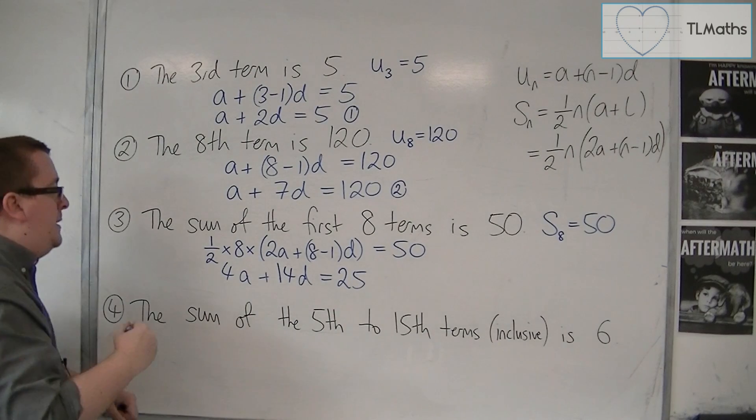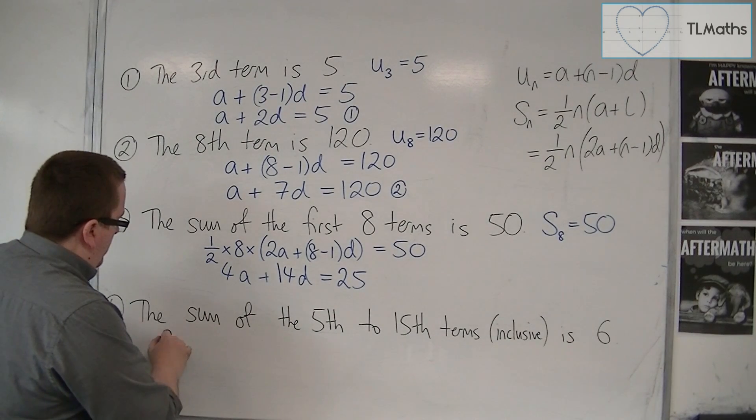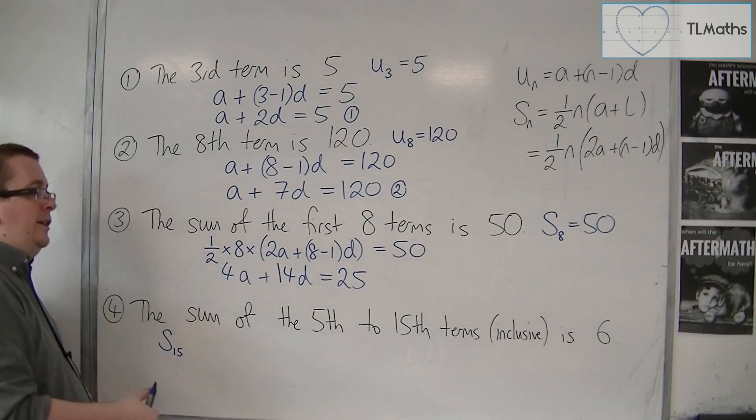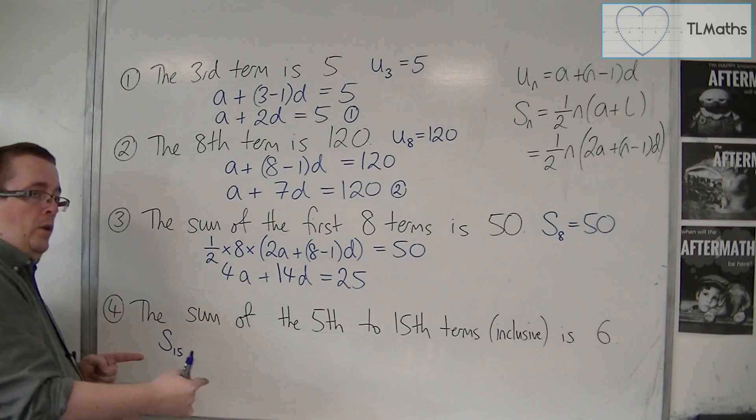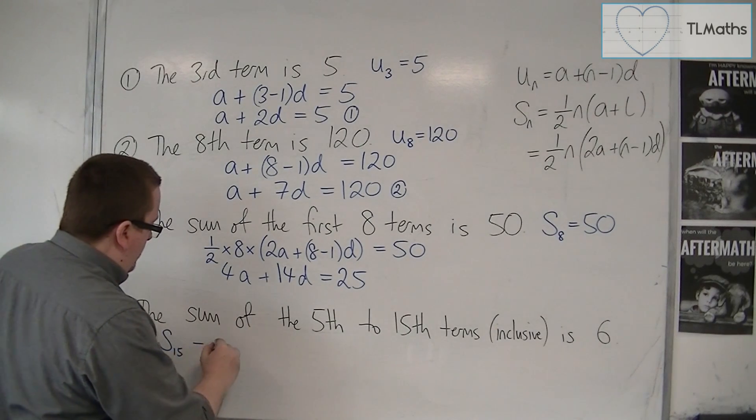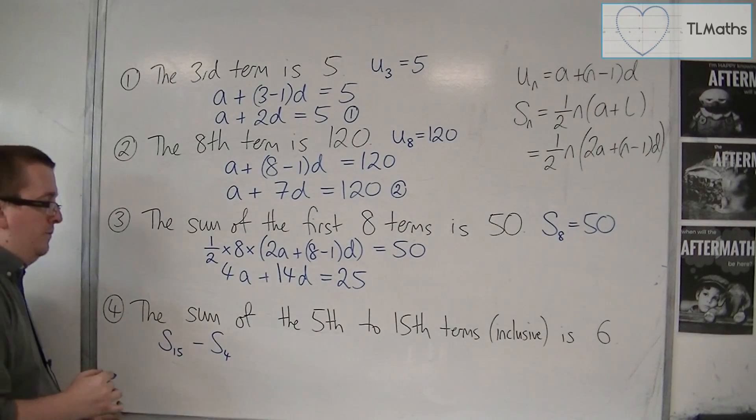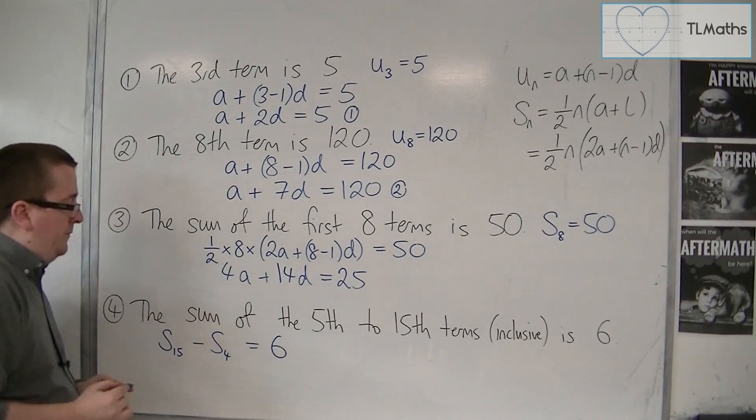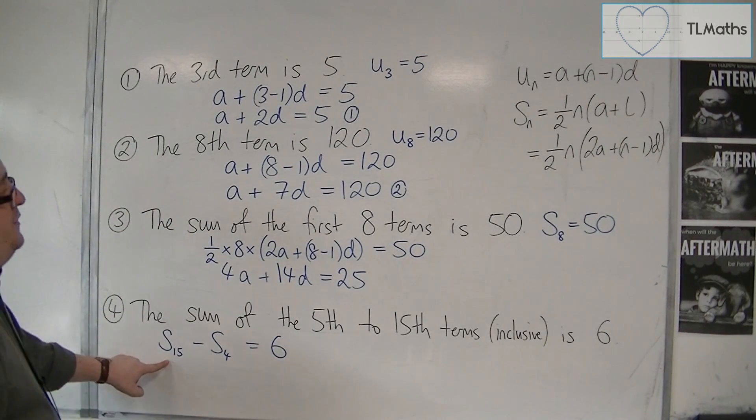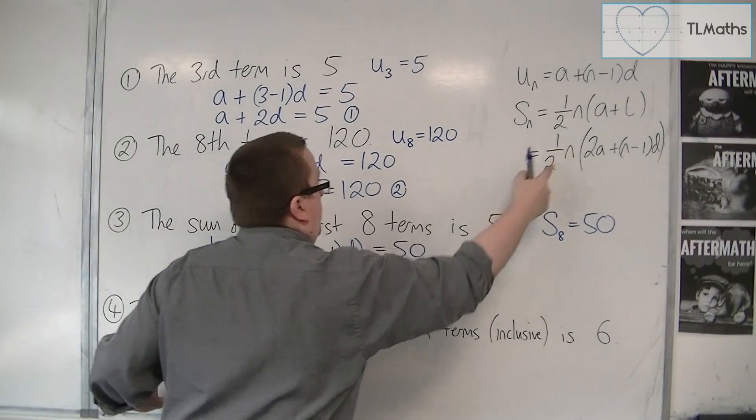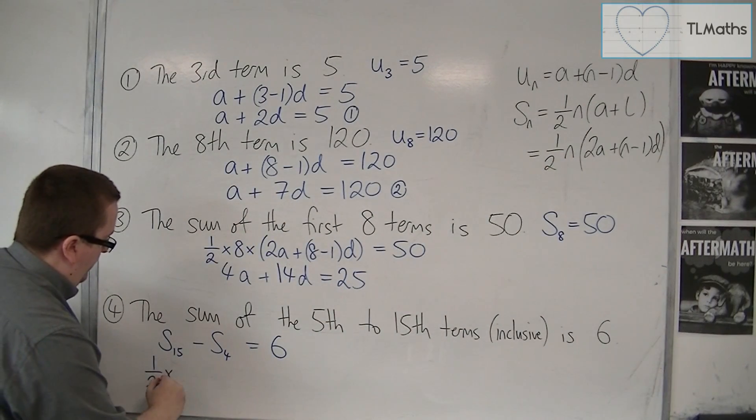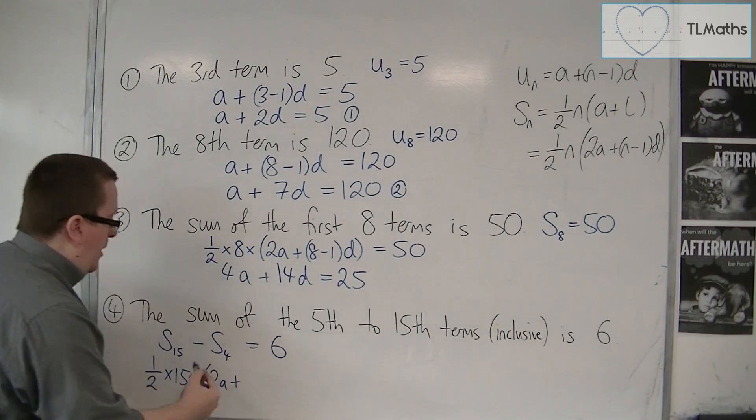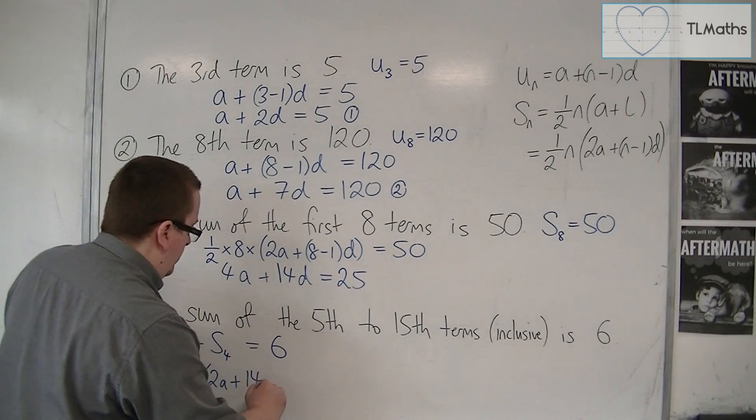Then what I could say is that the sum of the first 15 terms, but that's too many because that includes 1 to 4 as well. If I take away the first 4 terms, so S4, then this is the sum that I want, and I know that that's equal to 6. So the sum of the first 15 terms using this formula is one half times 15 times 2a plus n minus 1, so 15 minus 1, so 14D.